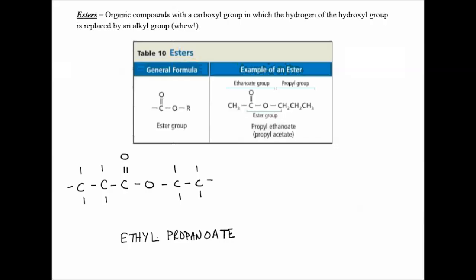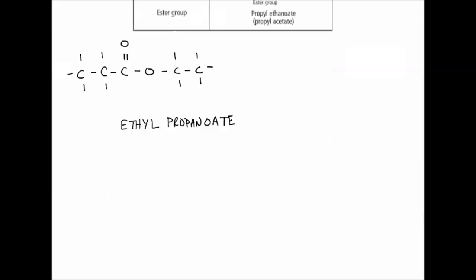So we name the alkyl group first, but ending it with -oate. So first, we'll draw this, and we have to be careful. So sometimes, we can draw the acid to the right side of the molecule. So we're going to have four carbons on this side.